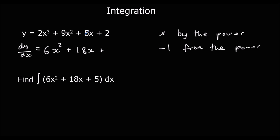For 5x, we've got the power of 1, so 1 times 5 is 5. We take 1 off the power, that goes down to x⁰, and we don't have to write x⁰ because anything to the power of 0 is 1. And the 2 here — think of it as 2x⁰ — if you multiply by 0 it's going to disappear. So the 2 completely disappears, and this is our differentiated answer.